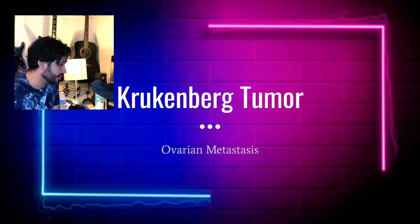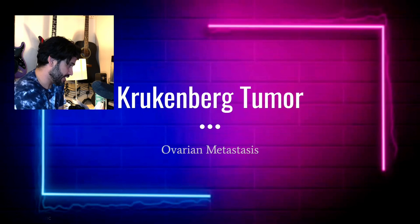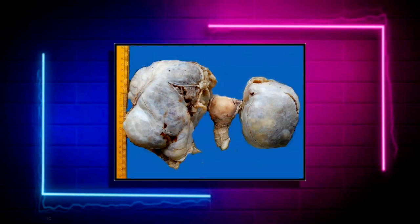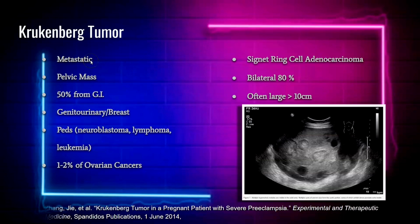Let's go over a quick review of Krukenberg tumor, which is an ovarian metastasis. It was first described by Friedrich Ernst Krukenberg in the article 'Uber das Fibrosarcoma Ovarii Mucocellulare Carcinomatodes' in 1896. It is usually a very large tumor found in the ovaries from metastatic origins. Here you can see a gross pathological specimen showing two very large tumors with the uterus in the middle.